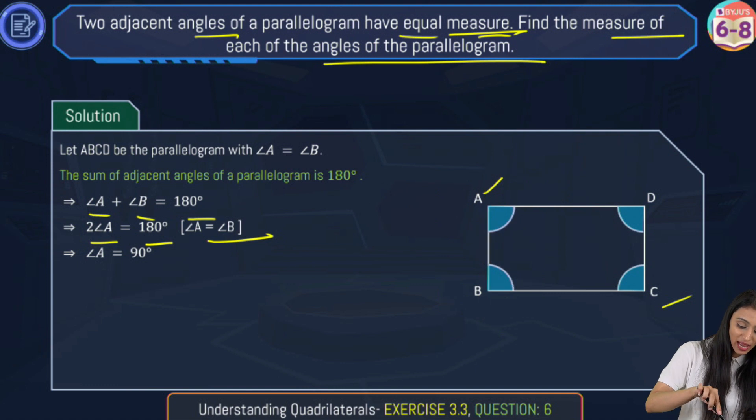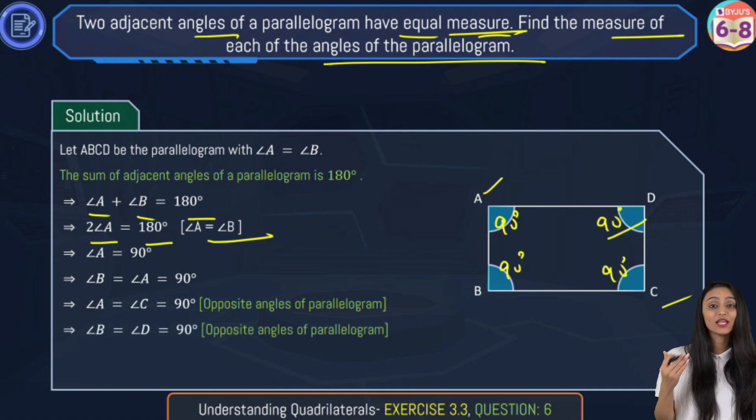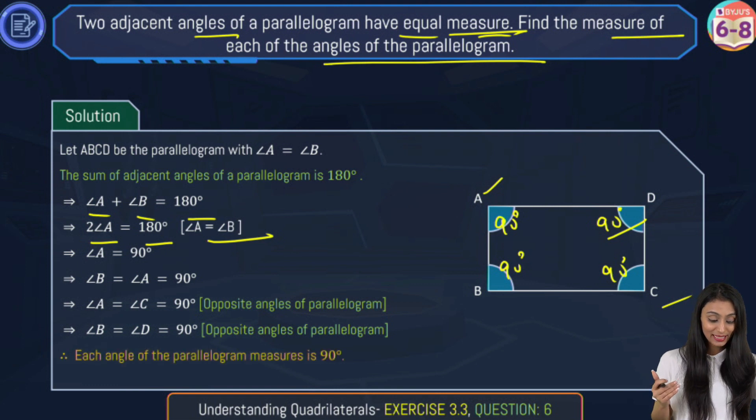So I've got the measure of angle A over here, that's 90 degrees. Now I know that adjacent angles have equal measure, so this angle B over here will also be equal to 90 degrees. Now since opposite angles of a parallelogram are equal, angle B and D will be equal, angle A and C will be equal, they all are going to equal 90 degrees.